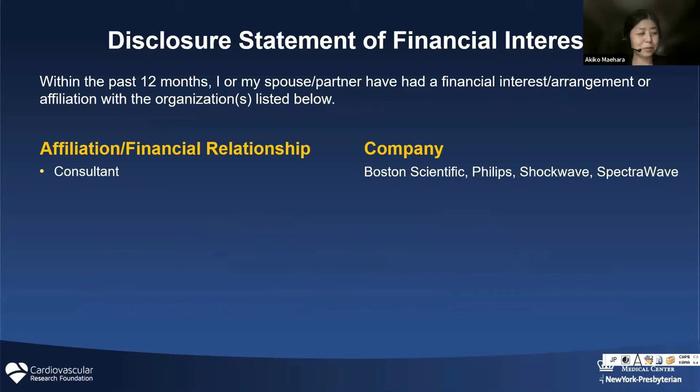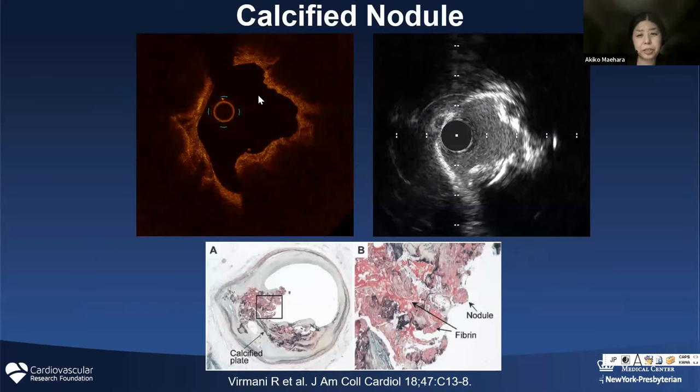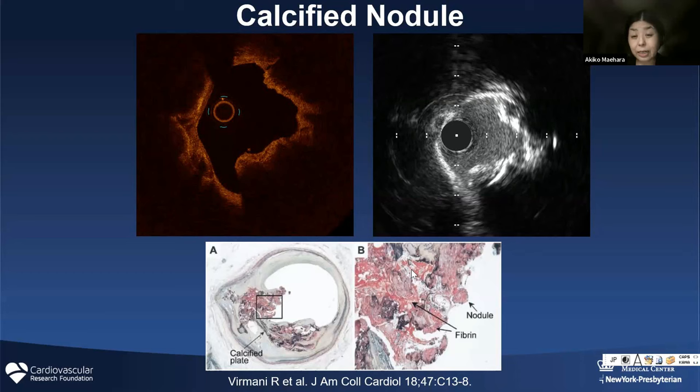Start with this picture. How do pathologists define the calcified nodule? If you look inside, there is a small calcium here, small calcium here, small calcium here. In between, there is fibrous tissue. So even though we say 'calcified nodule,' it is actually an accumulation of small calcium fragments. Each one is actually a tiny calcium. That's how the calcified nodule looks.